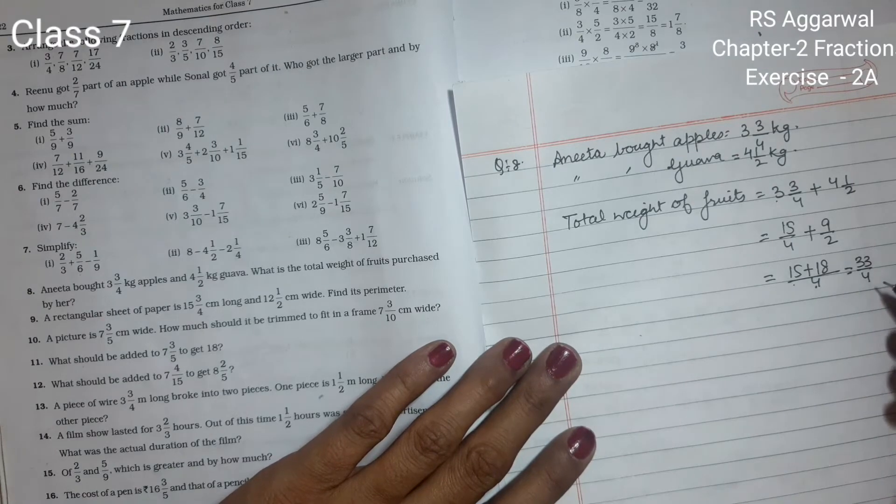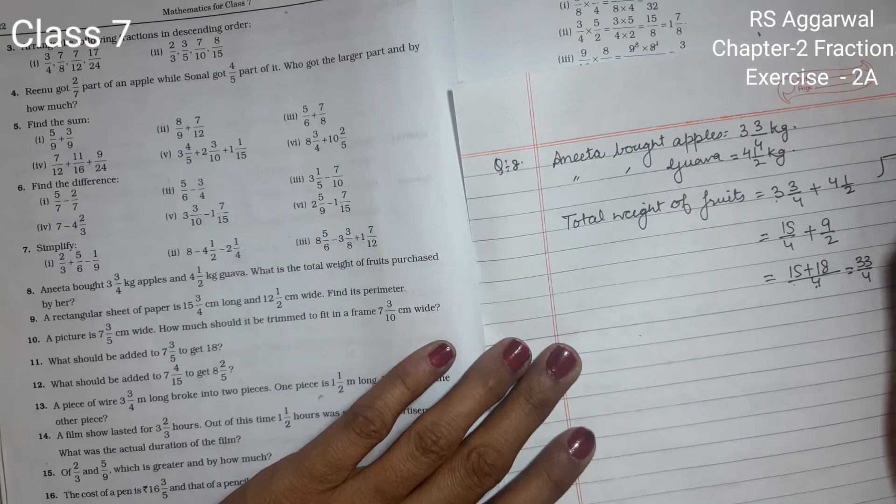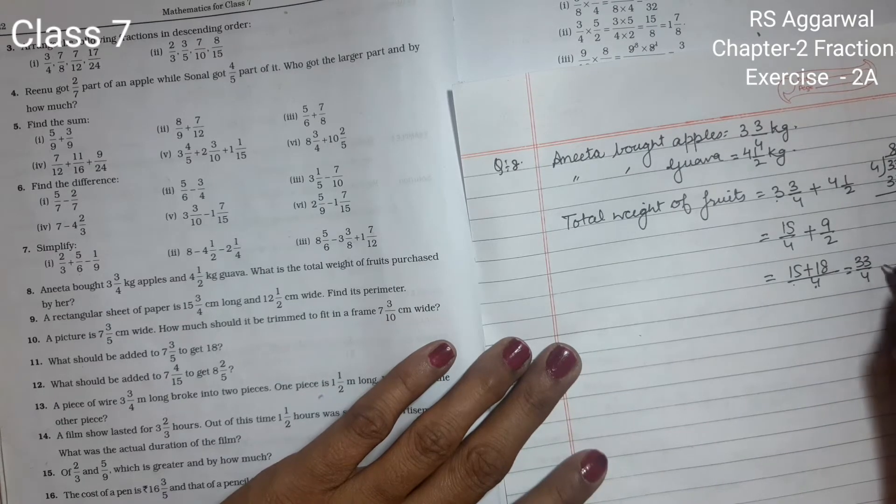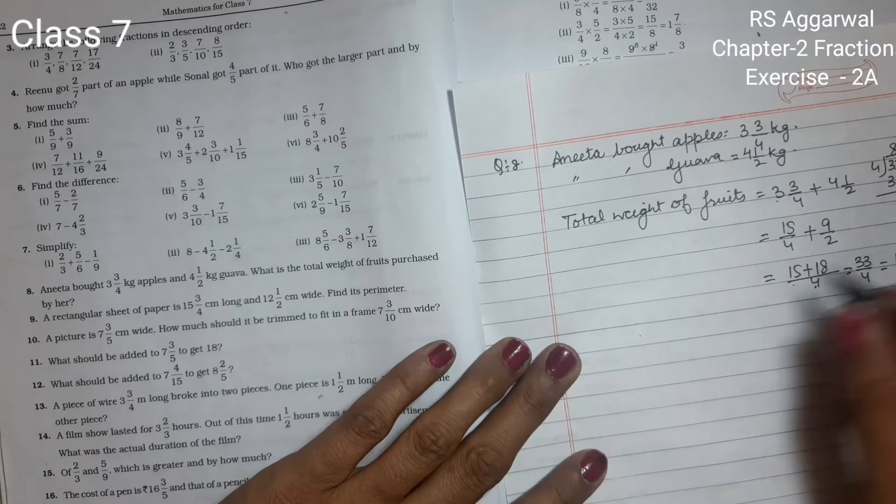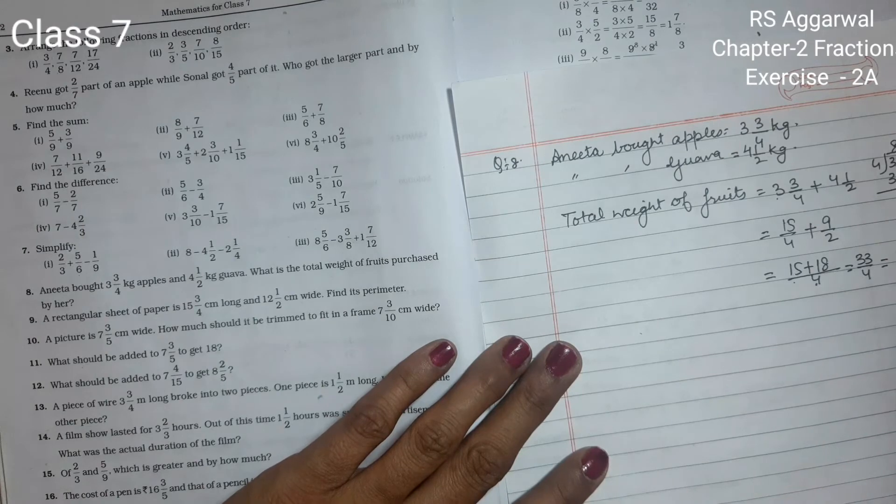Now we can convert it to a mixed fraction: 33 divided by 4 - 4×8 is 32, 33 minus 32 leaves remainder 1. The answer is 8 whole 1 upon 4. Total weight of apples and guava is 8 whole 1 upon 4 kg.